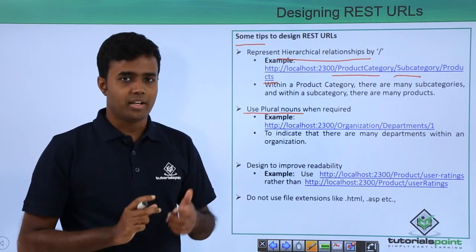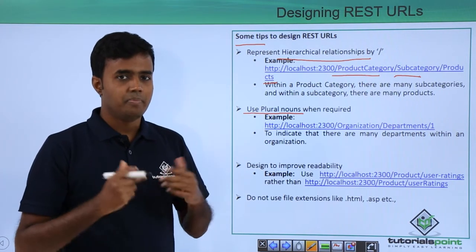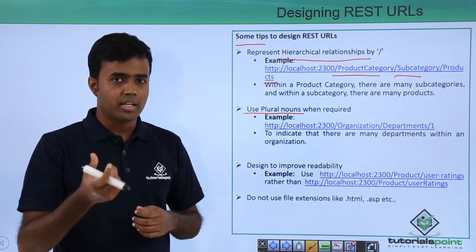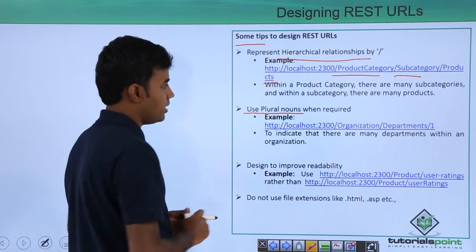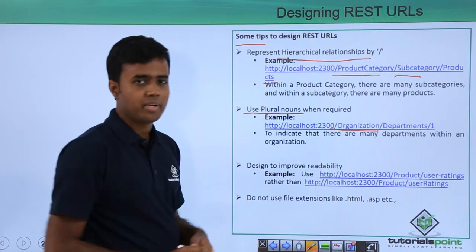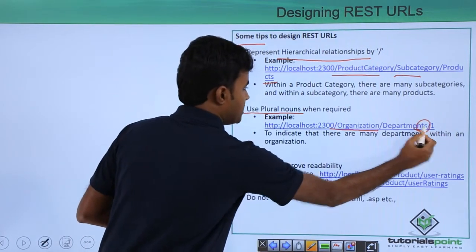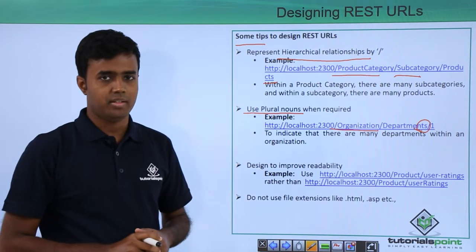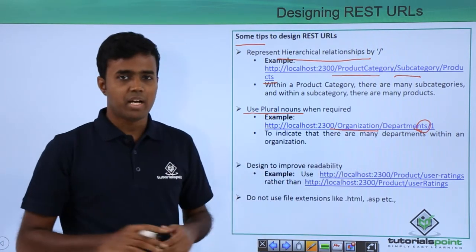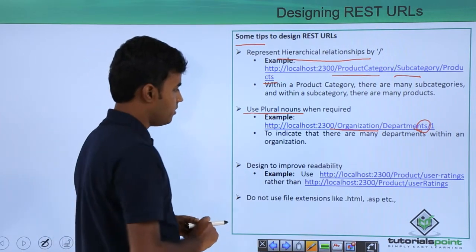The second tip is using plural nouns when required. When you are dealing with collections or many items, it is always better to represent that collection in your URLs. For example, to say that an organization contains many departments, use 'departments' rather than 'department', so the plural noun indicates there are several departments within the same organization.